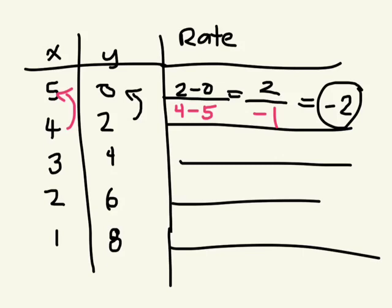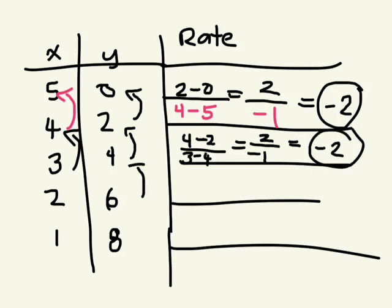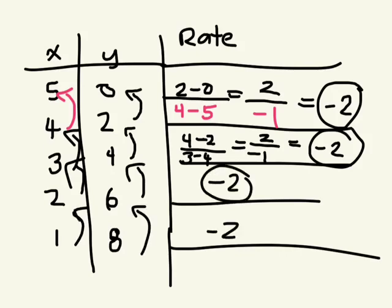It's decreasing. And let's check again. 4 take away 2 divided by 3 take away 4. 2 over negative 1. And again, we get negative 2. And for each change in variables, we'll get negative 2. Therefore, we know this relation has to be linear because it's increasing and decreasing by the same amount every time.